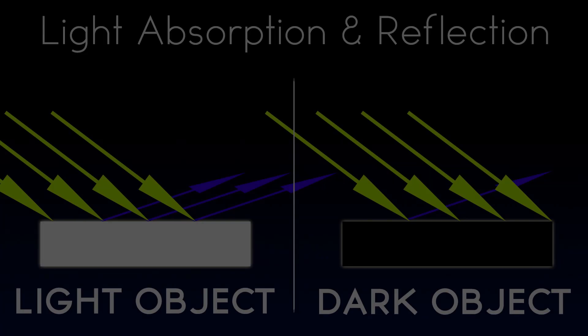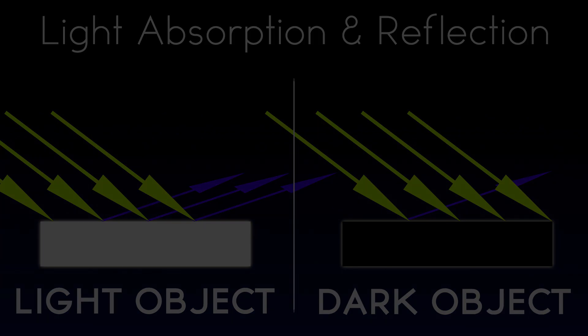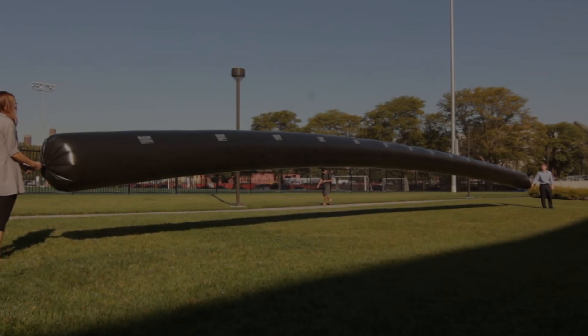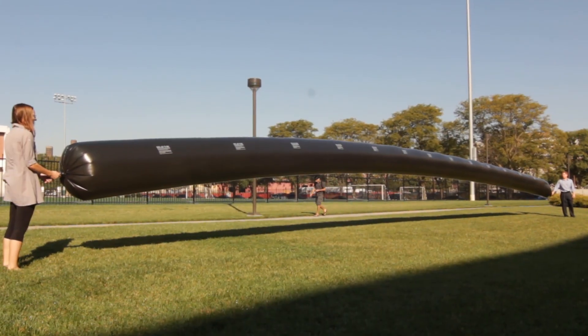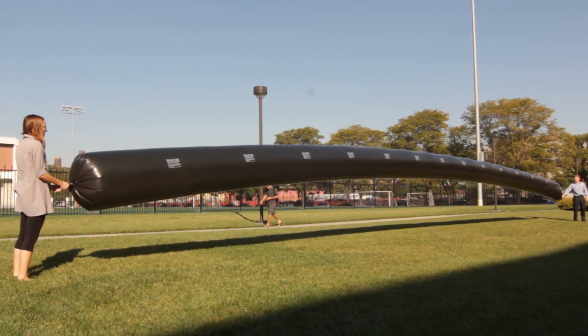A black object will absorb more light and heat up faster than lighter colored objects around it, which are reflecting much of the incident light. Thus the temperature of the balloon and the air inside it will rise.